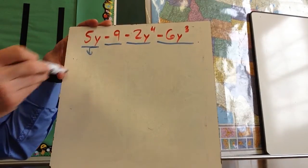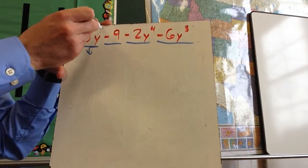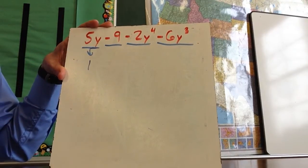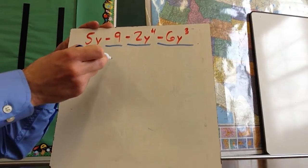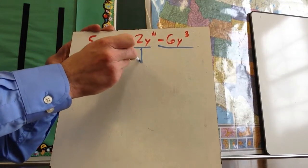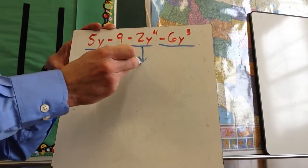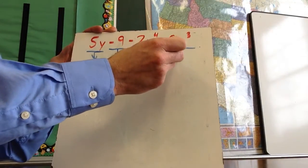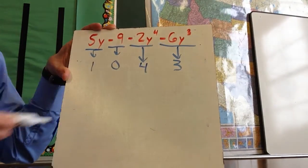This first term, 5y, remember that is the same as y to the 1, so this is to the first degree. Negative 9 is to the 0 degree. Negative 2y to the 4th is to the 4th degree. And negative 6y to the 3rd is to the 3rd degree.